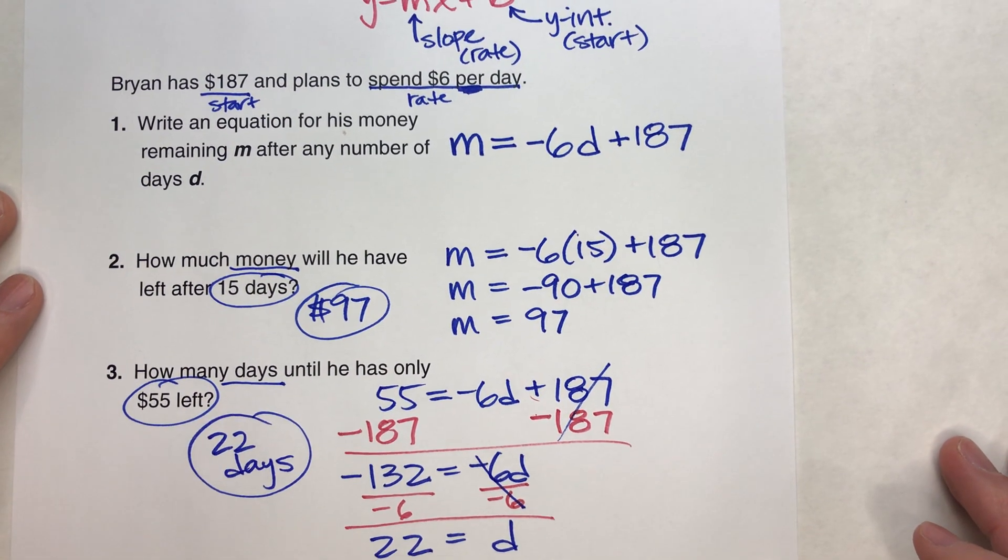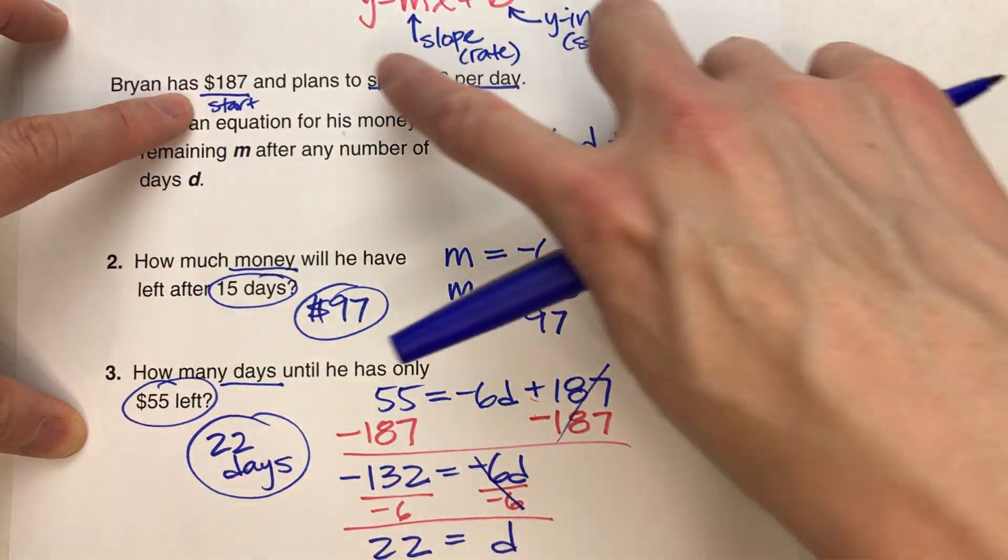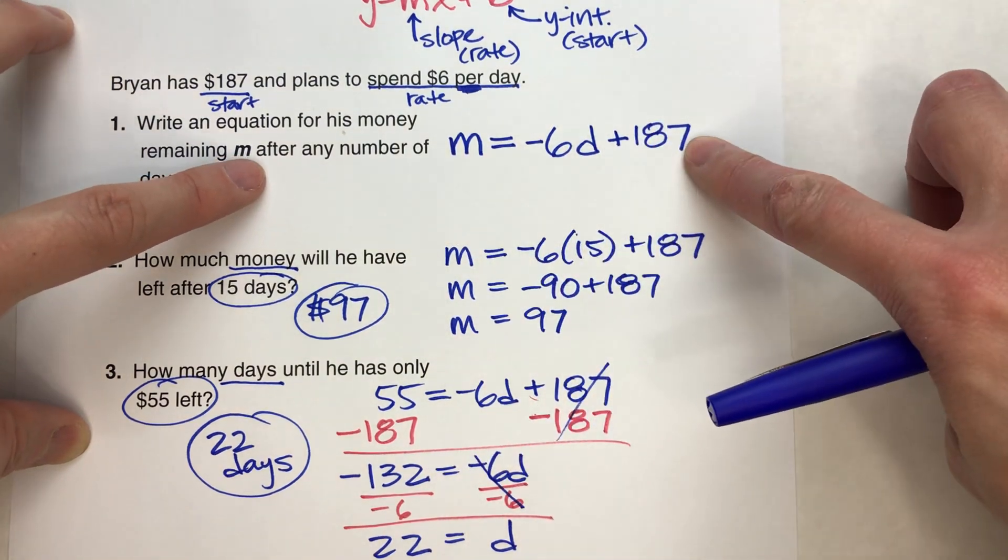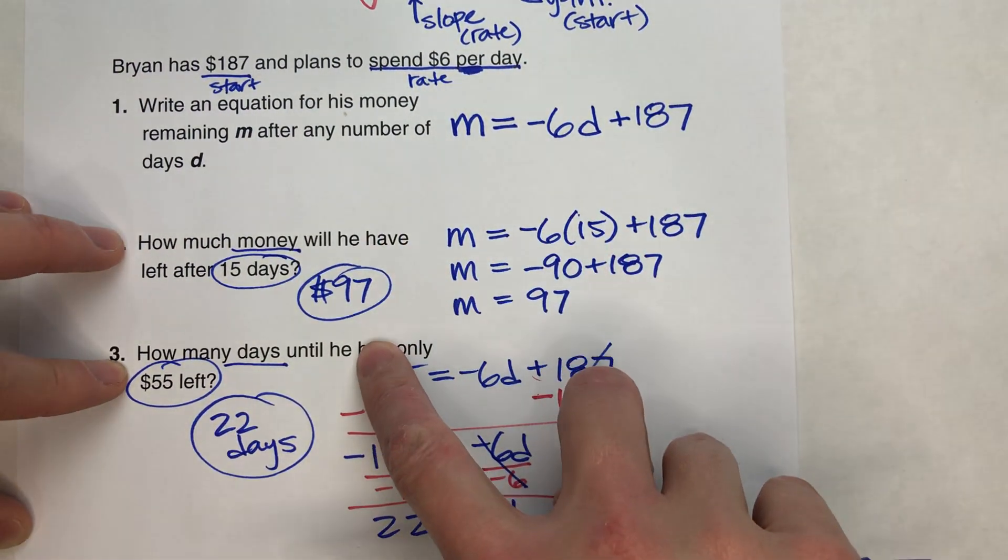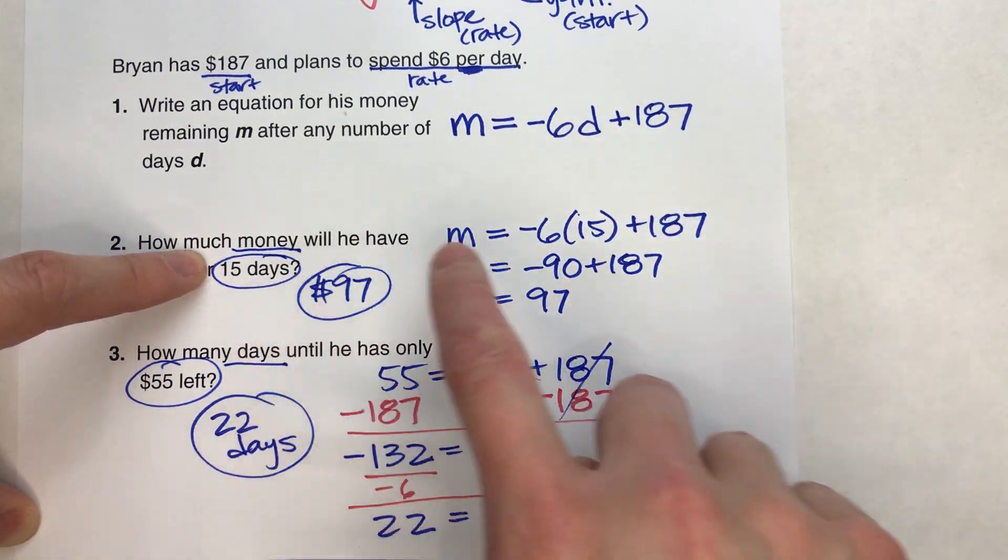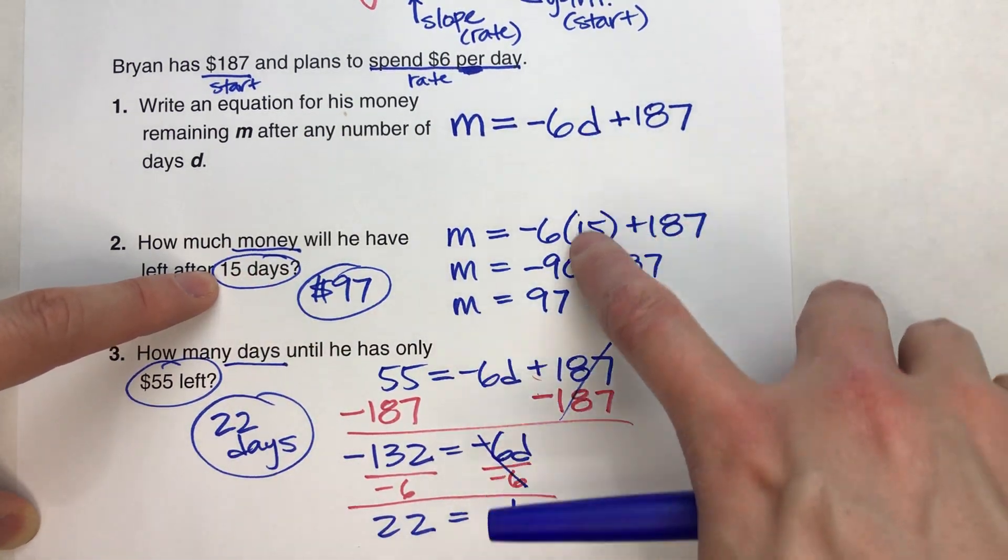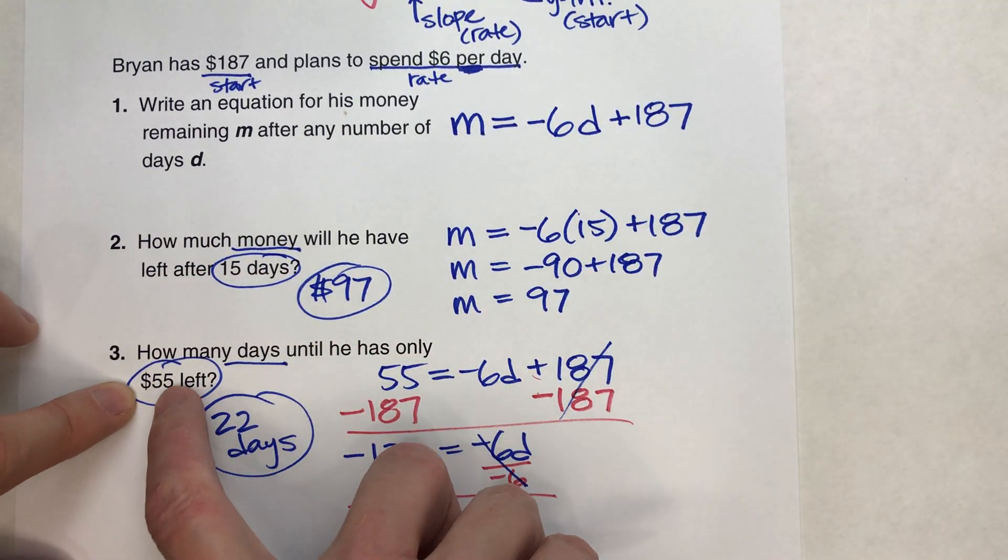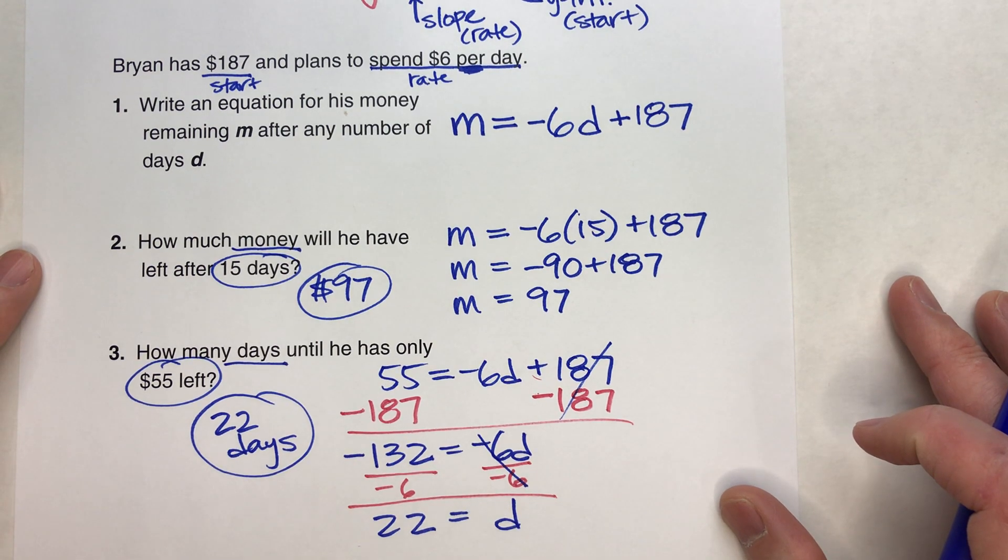So the key here is reading the story problem, figuring out which ones your rate and which ones your starting amount to write your equation. And then when you're trying to use that equation to solve problems, figure out which numbers go to which variables. If it tells you, in this case, 15 days, I put the 15 in for days. If it gives you $55, I'm going to put the 55 in for the money. And then we can solve to find the unknown variable.